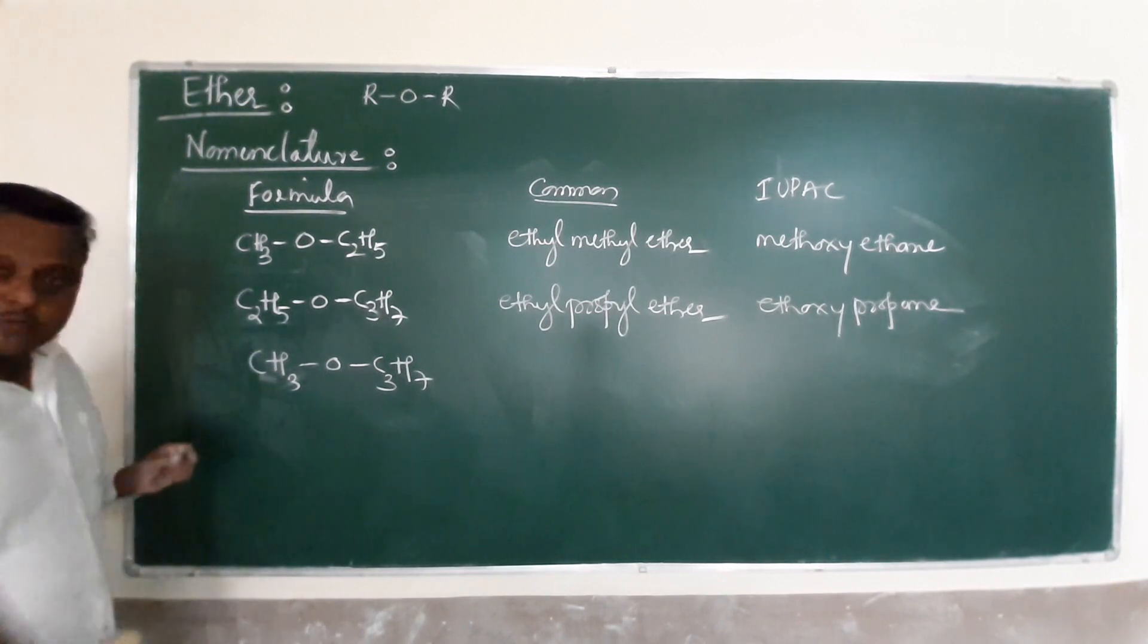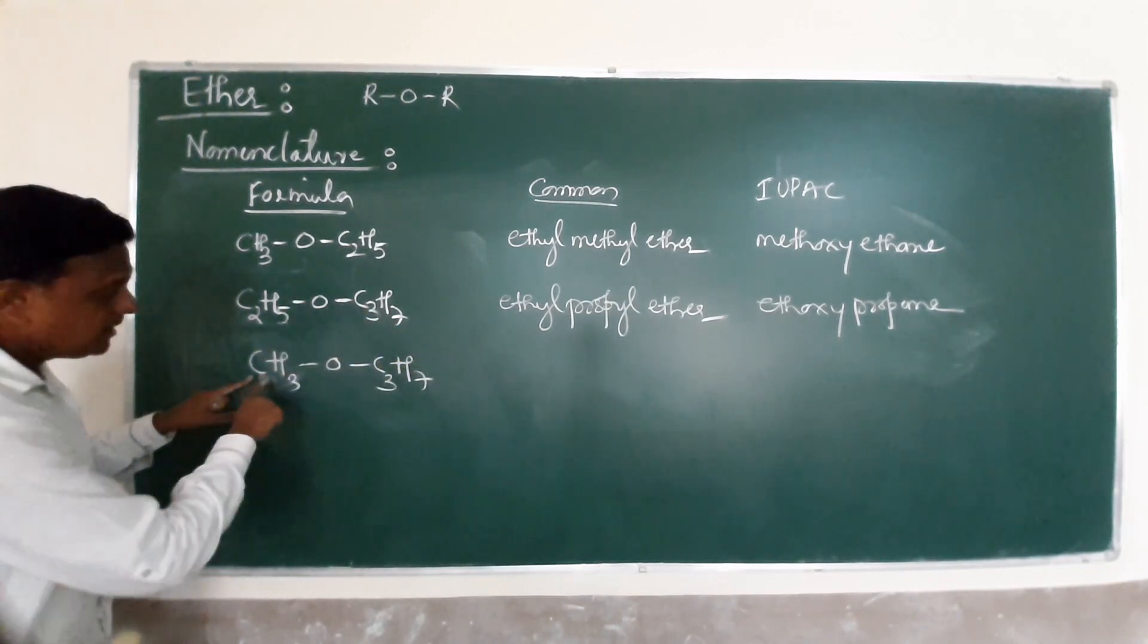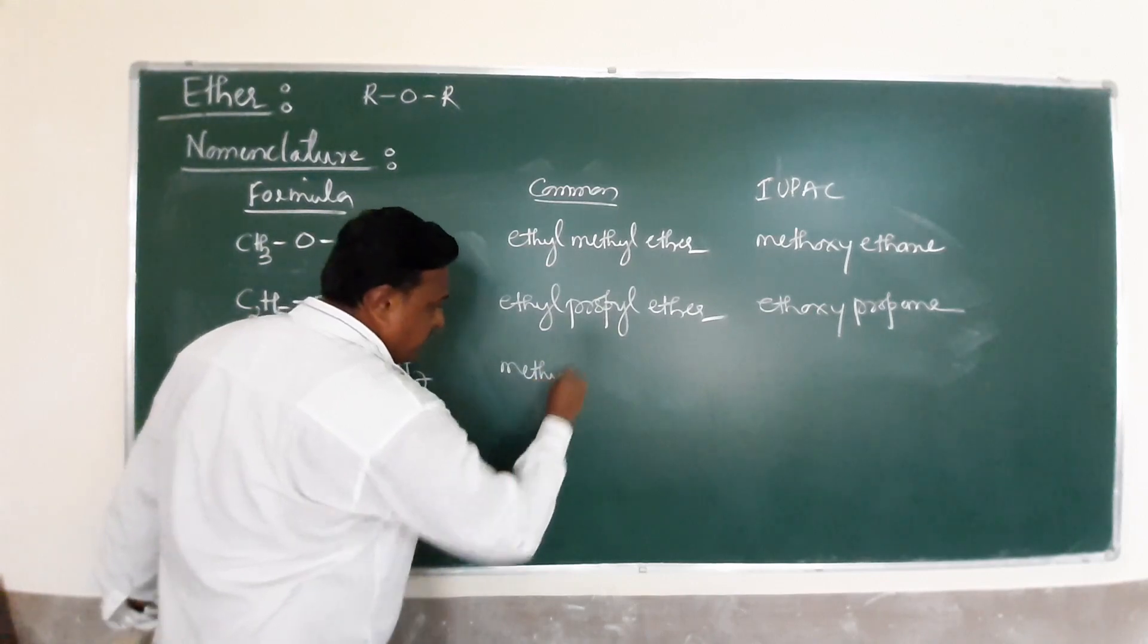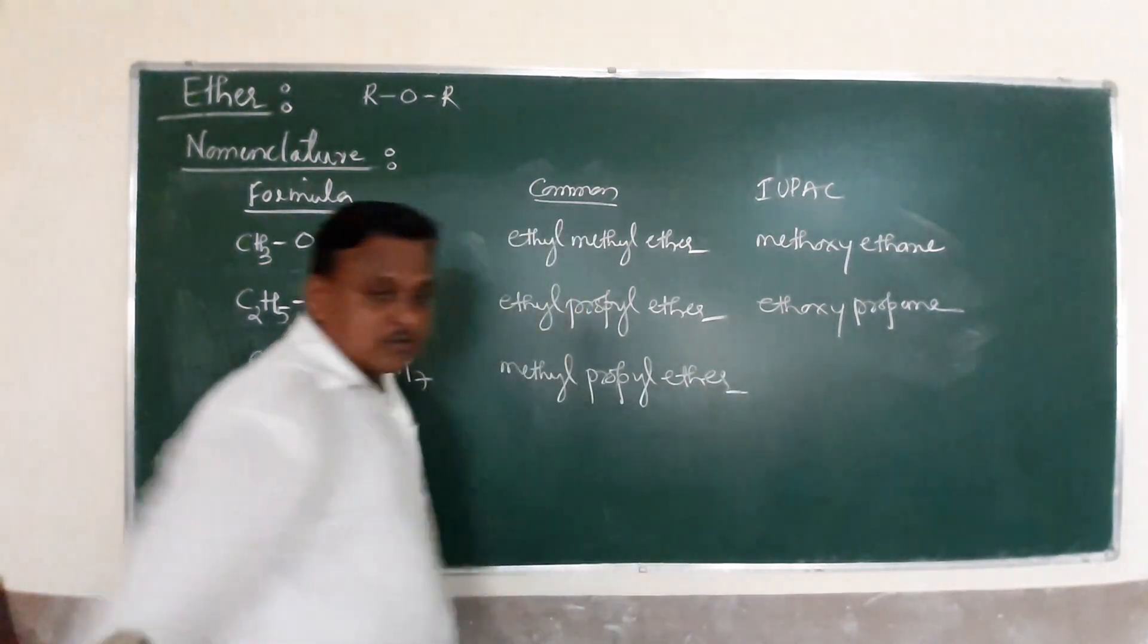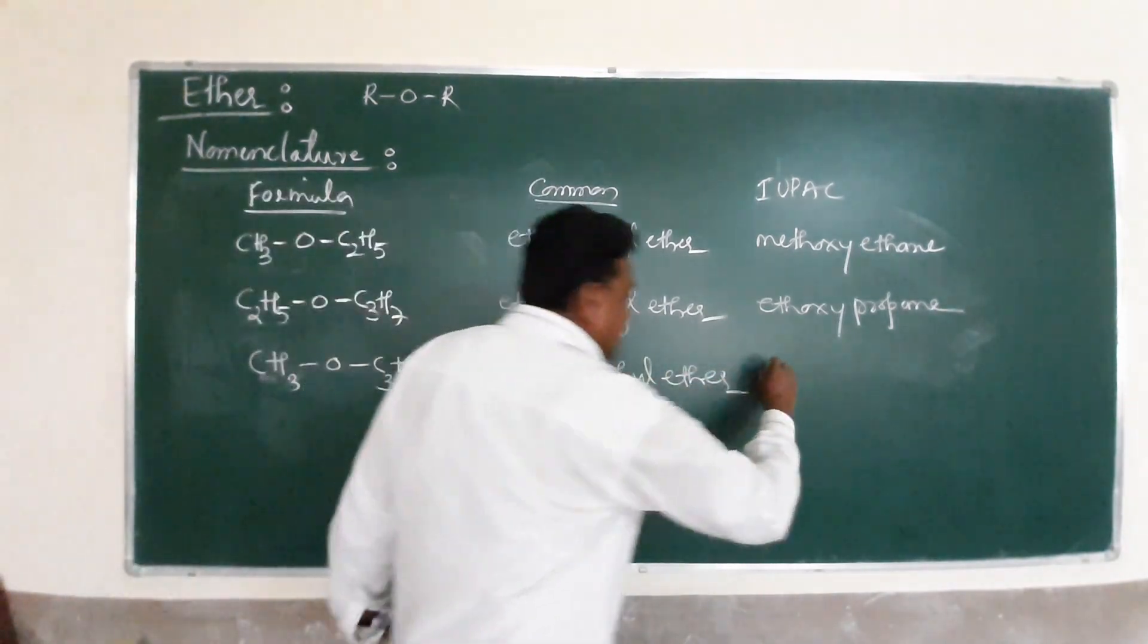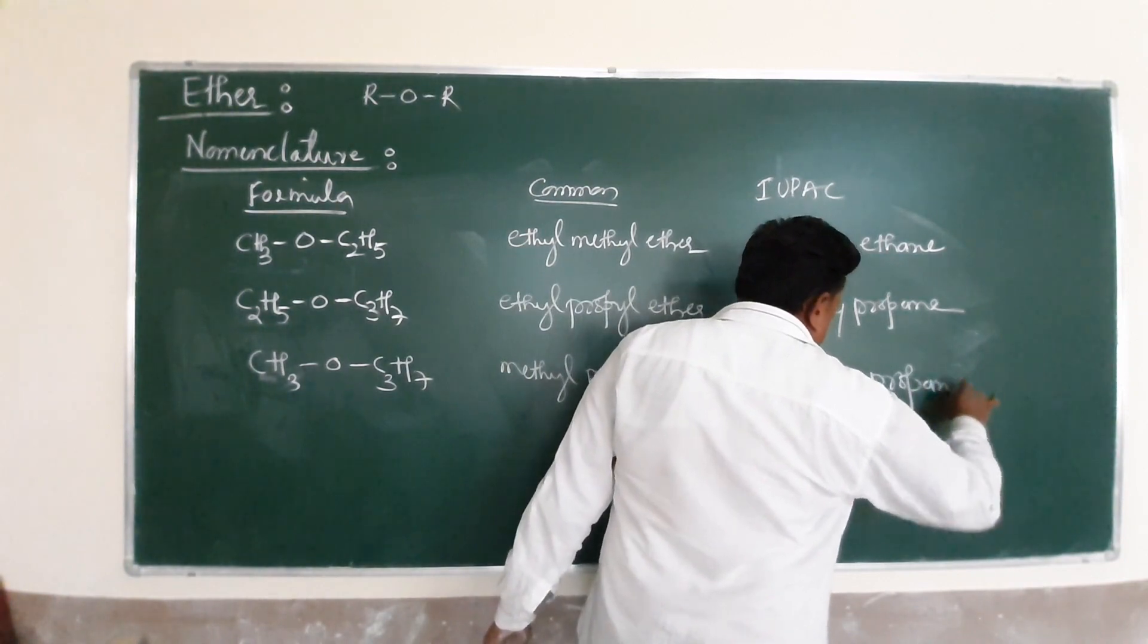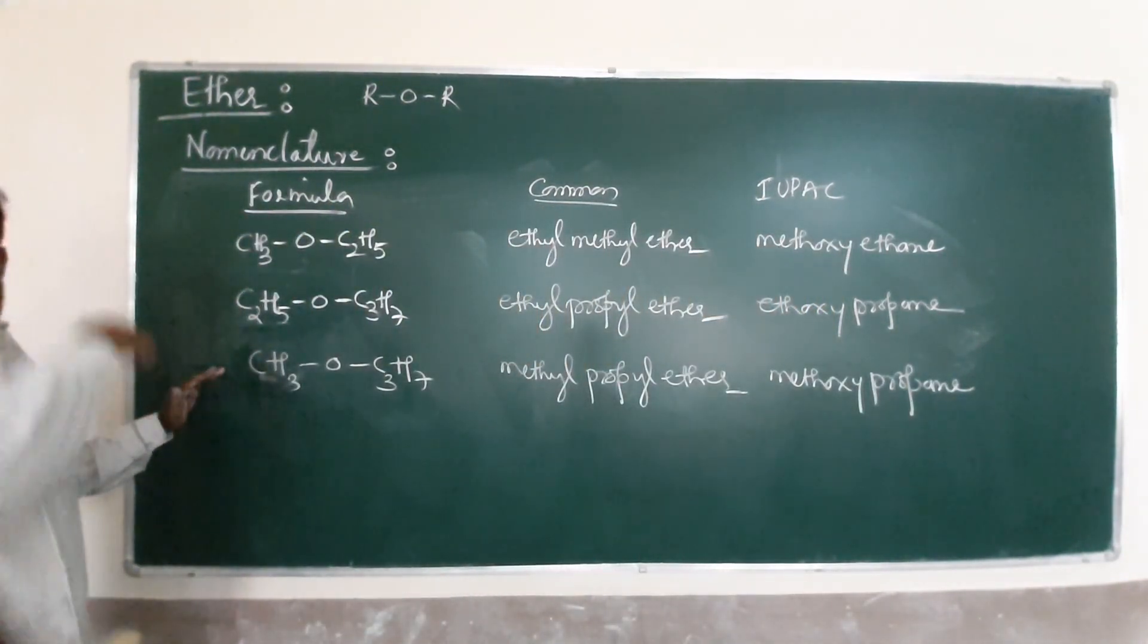For IUPAC, M comes before P alphabetically - methyl propyl ether. The IUPAC name is methoxy propane. These are the simple nomenclature of ethers - simple ethers and mixed ethers. This is the nomenclature part of the ether in our syllabus.